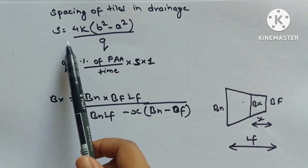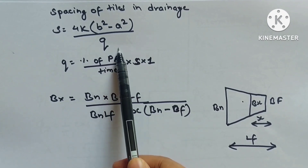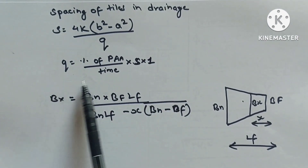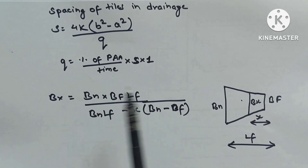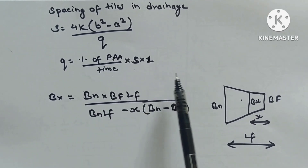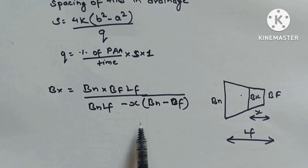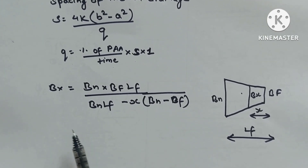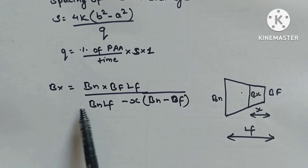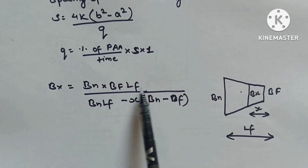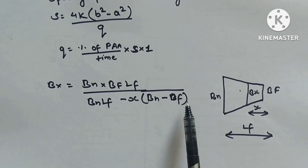Spacing of tiles in drainage: S = 4k(b² − a²)/Q, where Q = (percentage EPA × S × 1)/time. Cross drainage structure design: Bx = Bn + Bf·Lf and Bn·Lf − x(Bn − Bf).